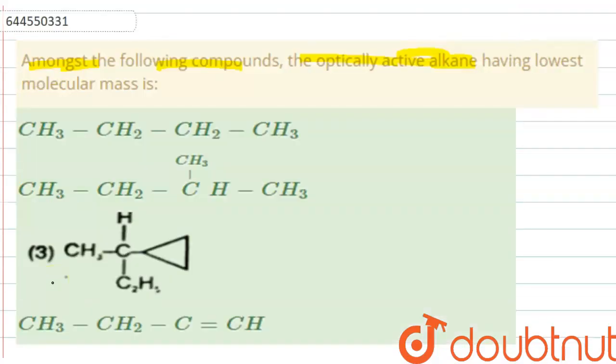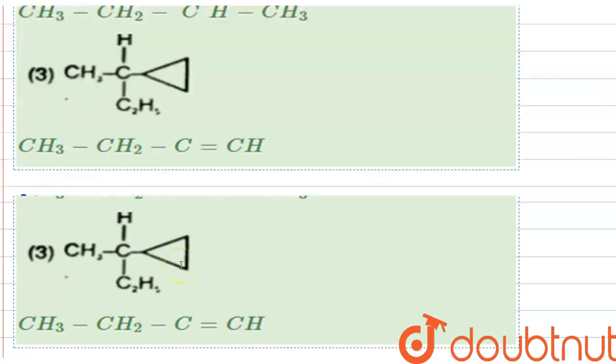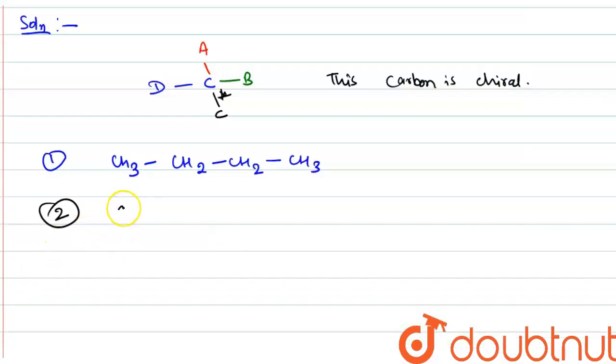Let's see the second option, which is 2-methyl butane: CH3-CH2-CH(CH3)-CH3. This is optically inactive because this carbon is attached with two similar methyl groups, and for chiral carbon all the groups should be different.